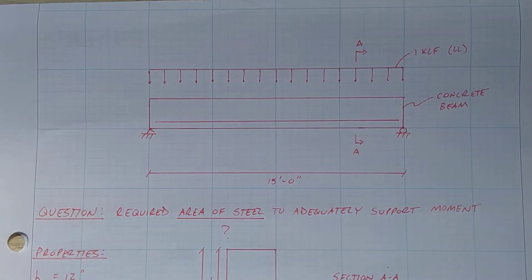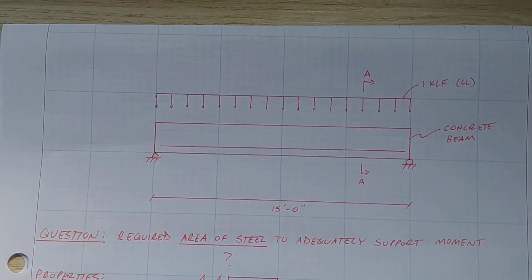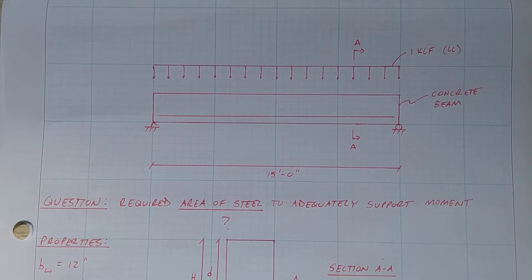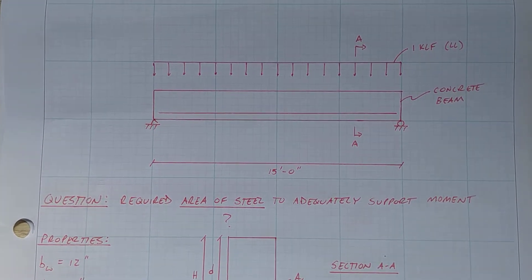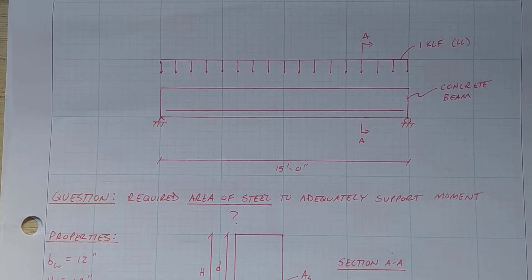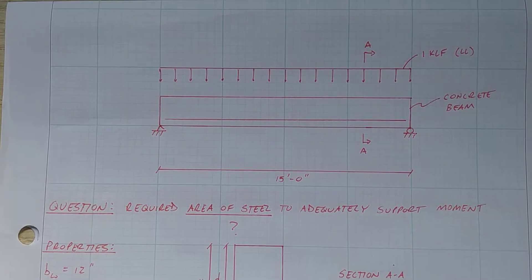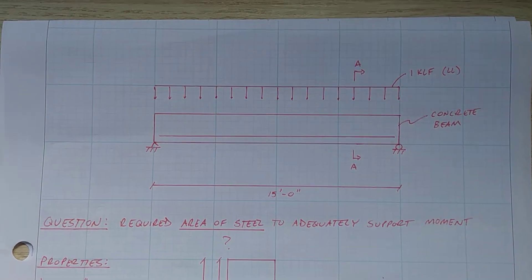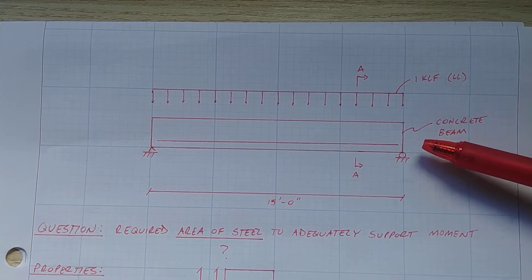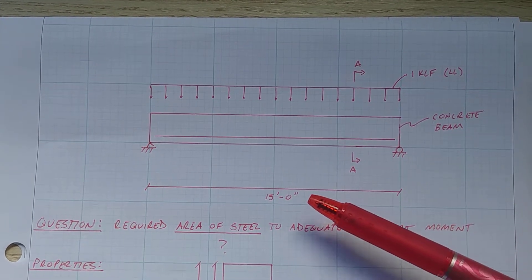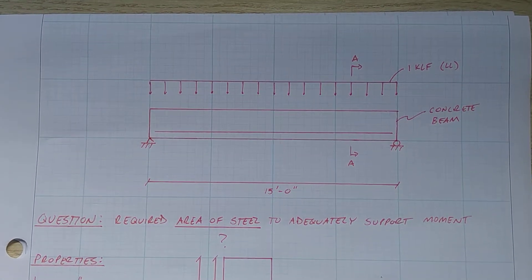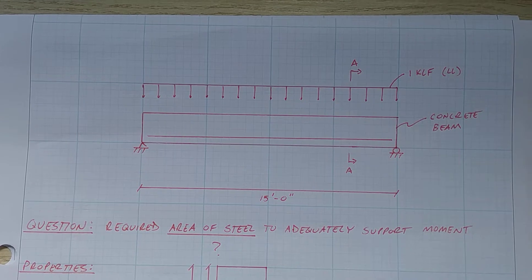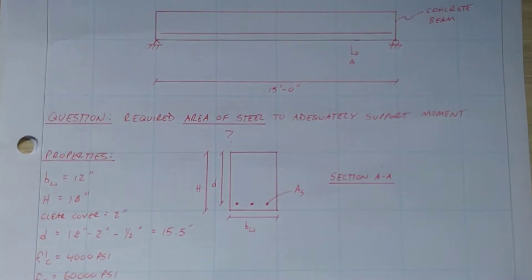Hey, what's going on everybody? Kesteva back here with another problem. This time we're going to take what we've been working on in terms of statics and apply it with a material. We have a simply supported concrete beam and the question is: what's the required area of steel to adequately support the moment? We have a concrete beam, simply supported, span of 15 feet, and a one kip per lineal foot live load applied onto the beam.